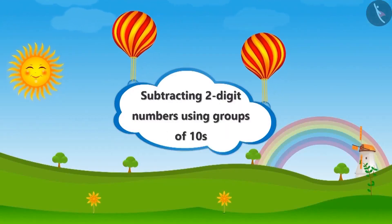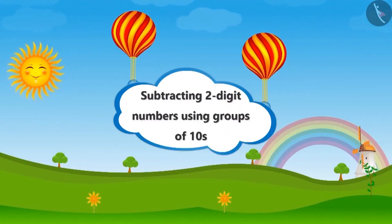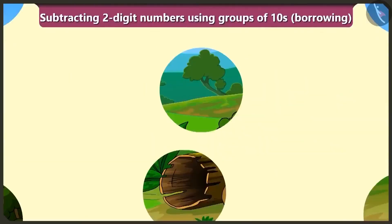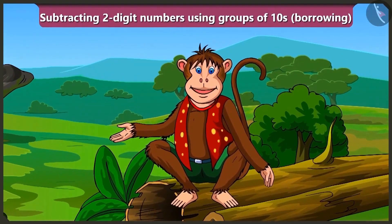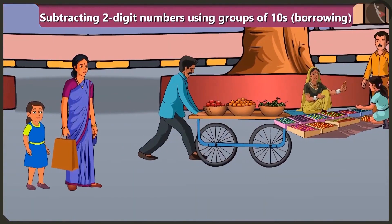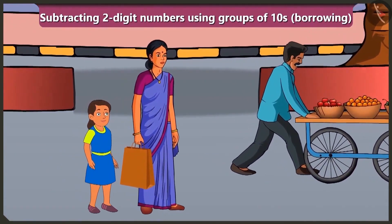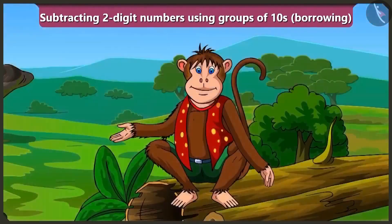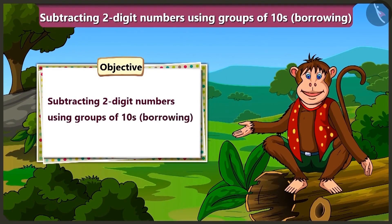Using two-digit numbers, using groups of ten, borrowing. Children, Bubbly has gone to the market with her mother today. So while visiting the market, we will use groups of tens to learn subtraction of two-digit numbers with the help of borrowing.